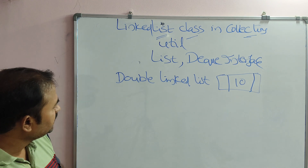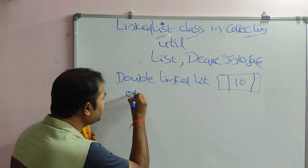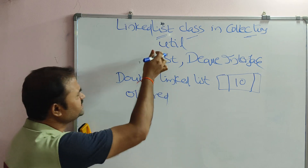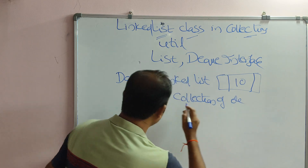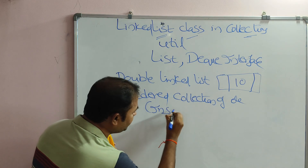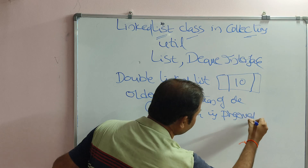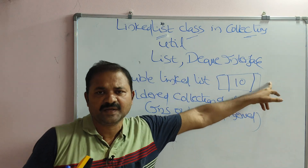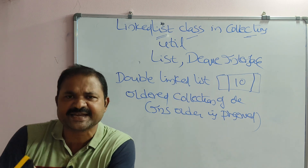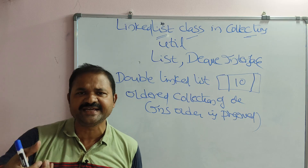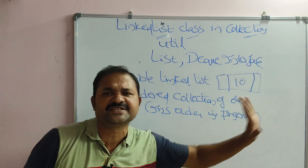LinkedList class contains an ordered collection of elements because it implements the List interface. Ordered collection means insertion order is preserved. The elements are stored in the LinkedList according to the inserted order. For example, if we insert three elements such as 10, 20, 30, they will be stored in the same order: 10, 20, 30.